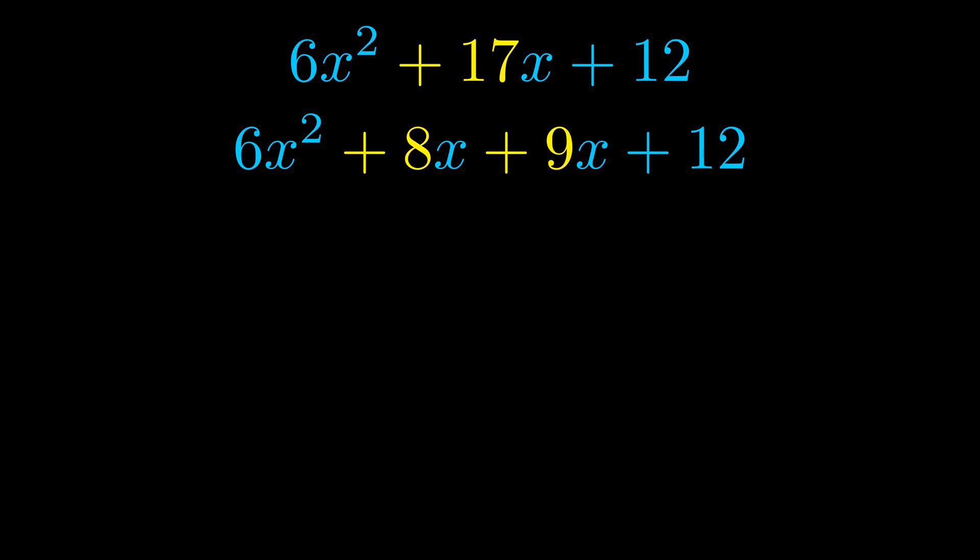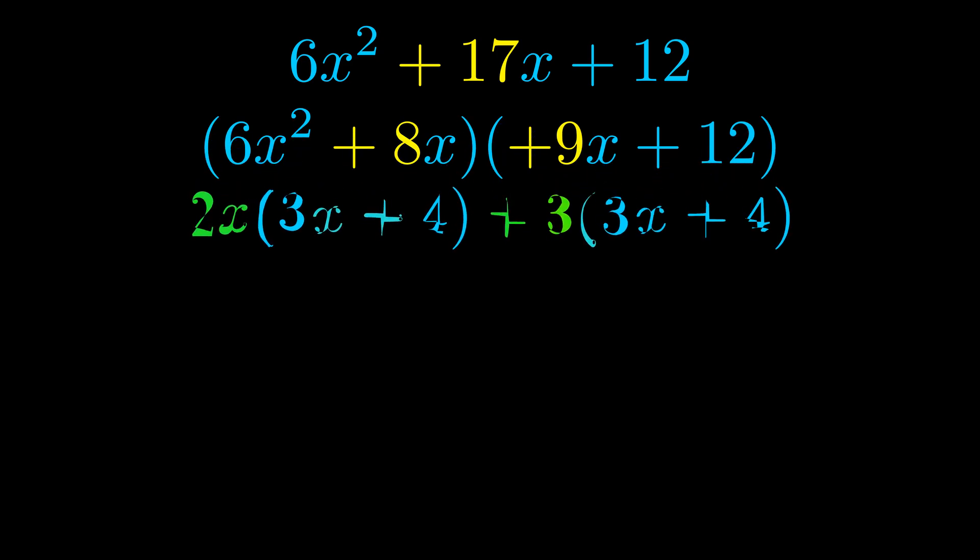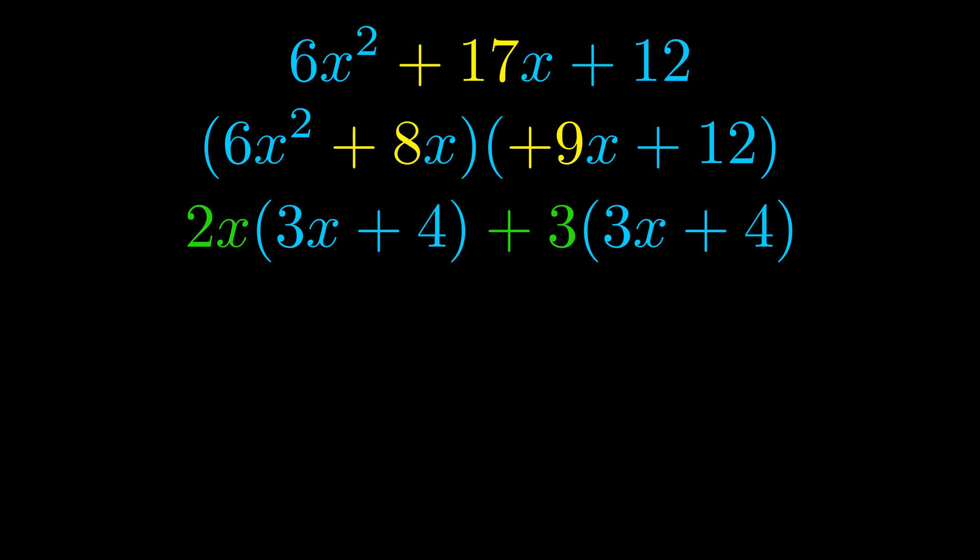Once we've done this, we go ahead and put parentheses around the first term and the last term. And we do that so that we can take the greatest common factor out of both terms. We can see the greatest common factor is now outside in green. Notice also how what remains inside of the parentheses is the same in both cases.